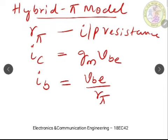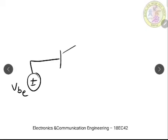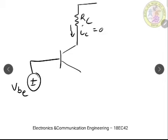To draw the hybrid pi model, let us consider our amplifier circuit. The amplifier circuit is redrawn by eliminating all DC sources, since we are concerned with only the signal components. Here we have the Vbe source connected to the base, and at the collector we have the current component IC = Gm × Vbe.